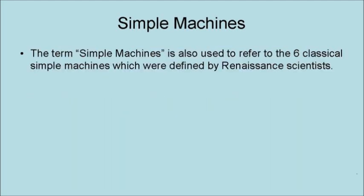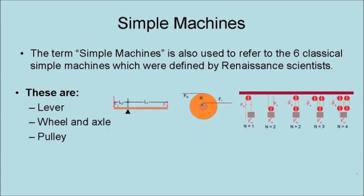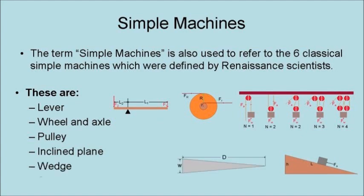The term simple machine is also used to refer to the six classical simple machines which were defined by Renaissance scientists. These are the lever, the wheel and axle, the pulley, the inclined plane, the wedge, and the screw.